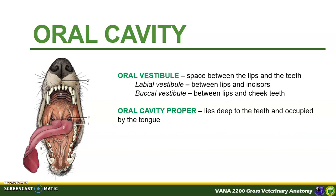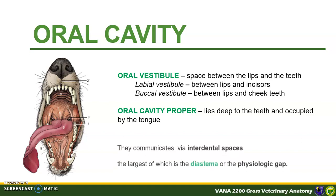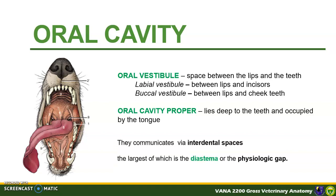The oral cavity proper is the actual space occupied by the tongue in a normal resting position. It is bounded rostrally by the lips, laterally by the cheeks, dorsally by the hard palate, and ventrally by the tongue. The oral vestibule and the oral cavity proper communicate via the interdental spaces, the largest of which is the diastema, or the physiologic gap located between the canine teeth and the cheek teeth in dog. This physiologic gap is narrow in dog in contrast to herbivores like ruminants and horses with a very wide diastema.